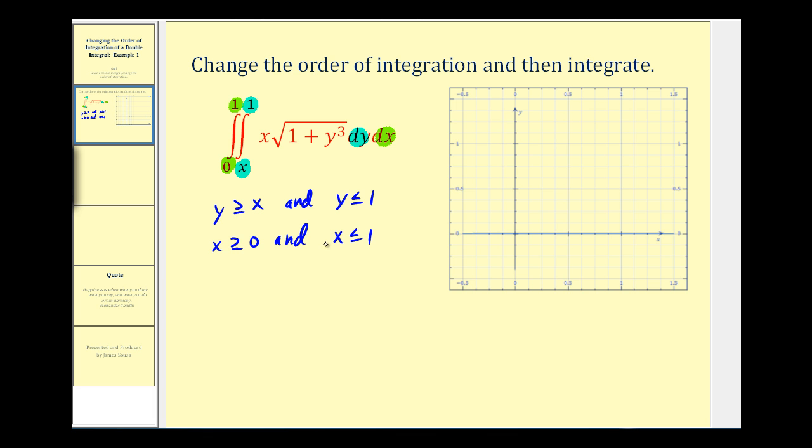Let's go ahead and graph this region of integration. So first let's graph y is greater than or equal to x. A line through the origin with a slope of one, passing through these points. Notice it states that y is greater than or equal to x, so we would shade above this line.